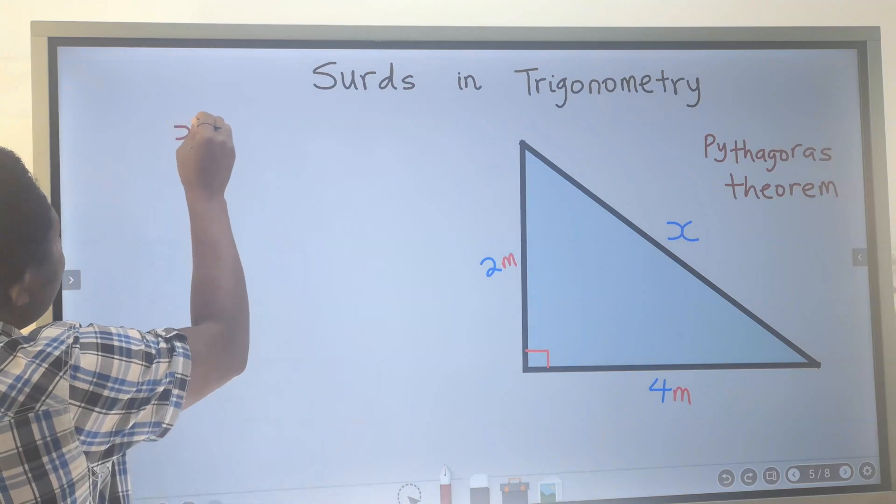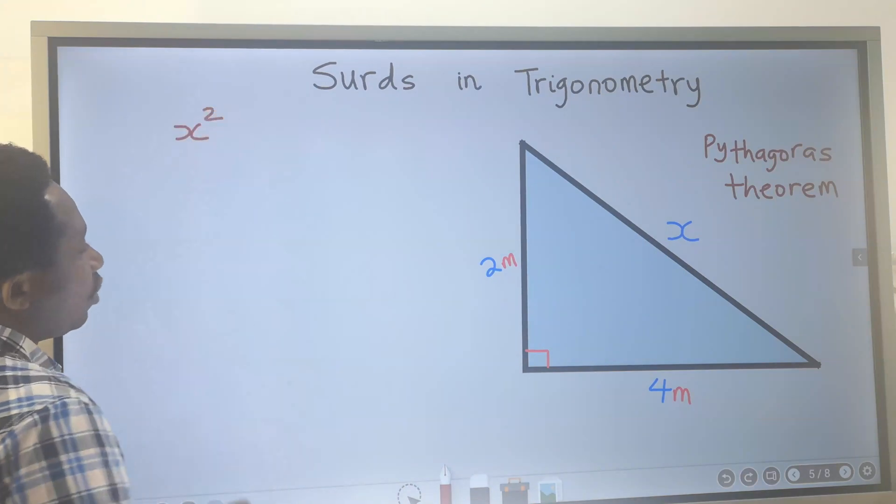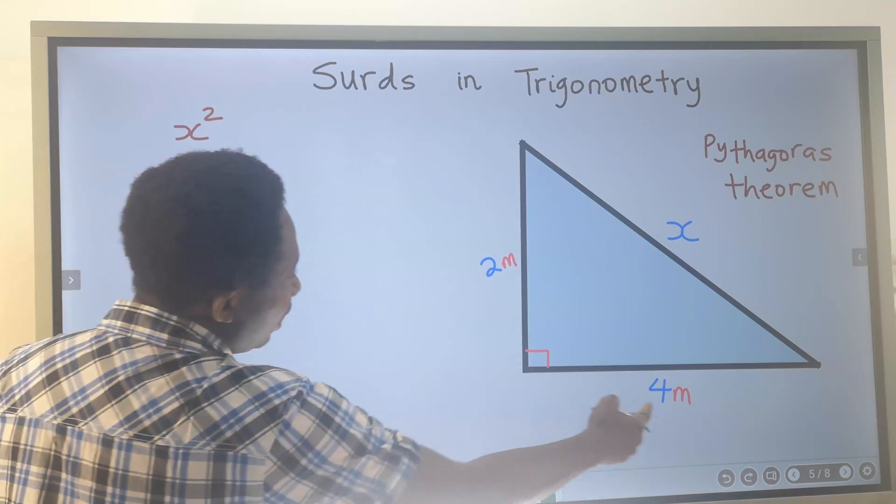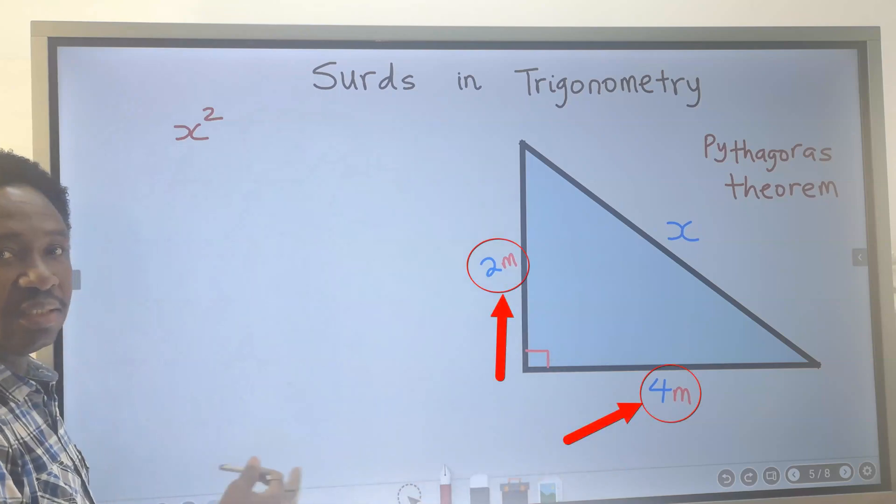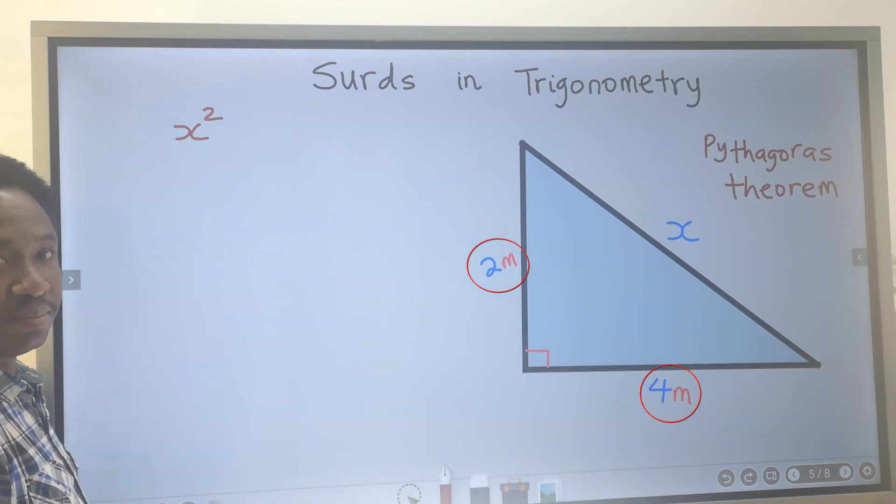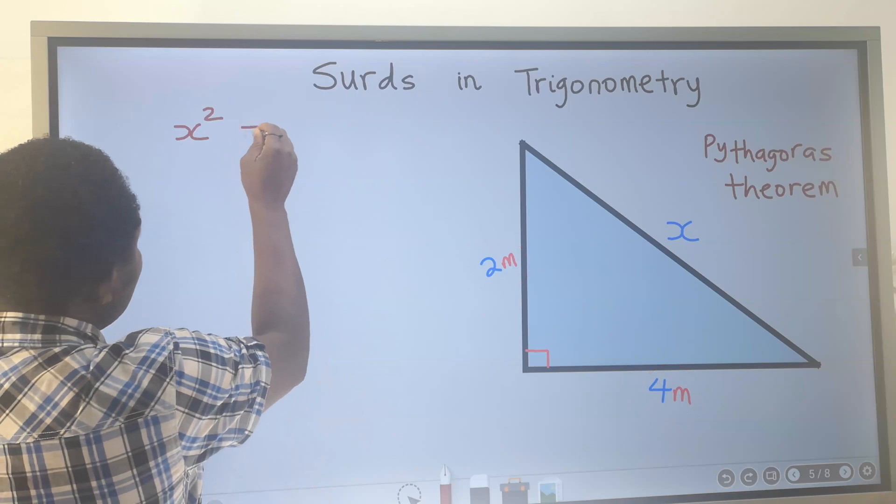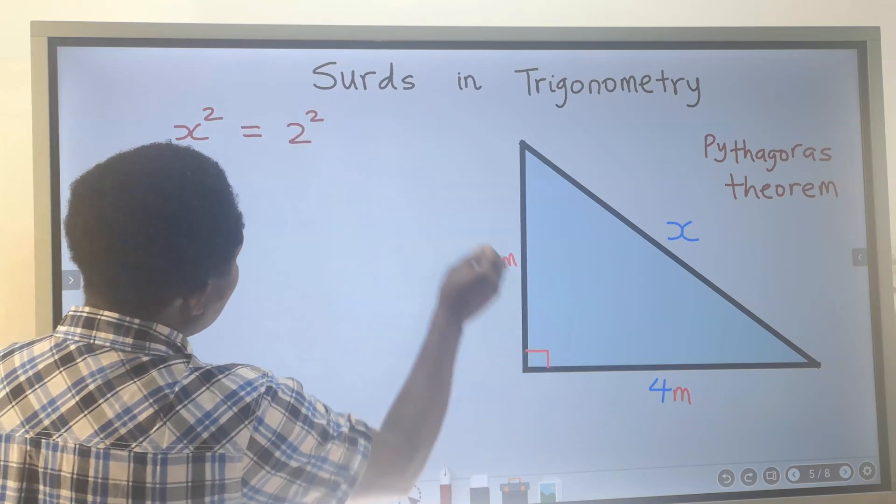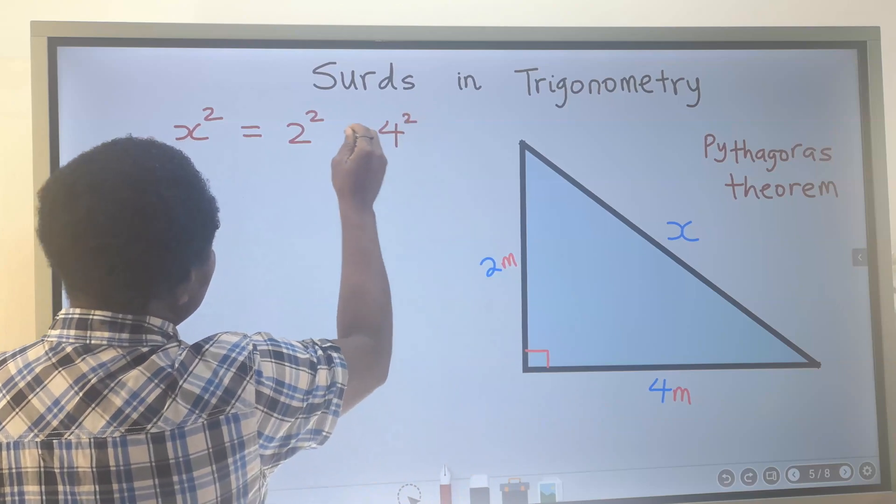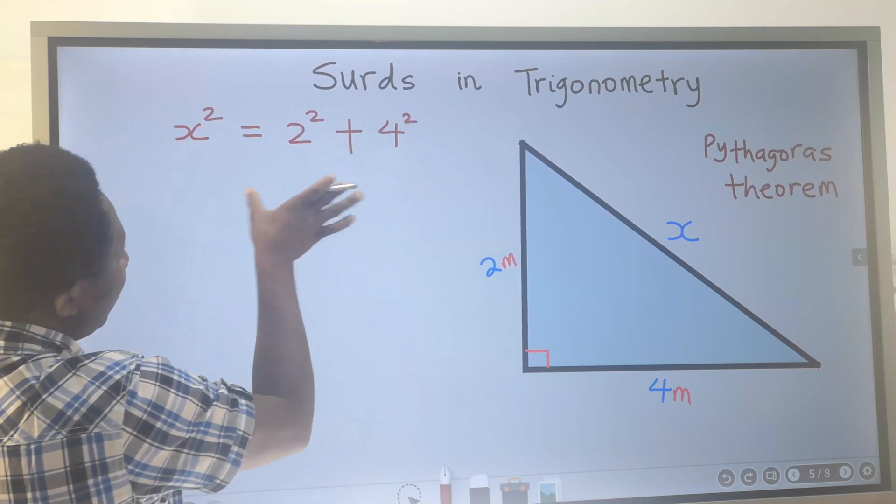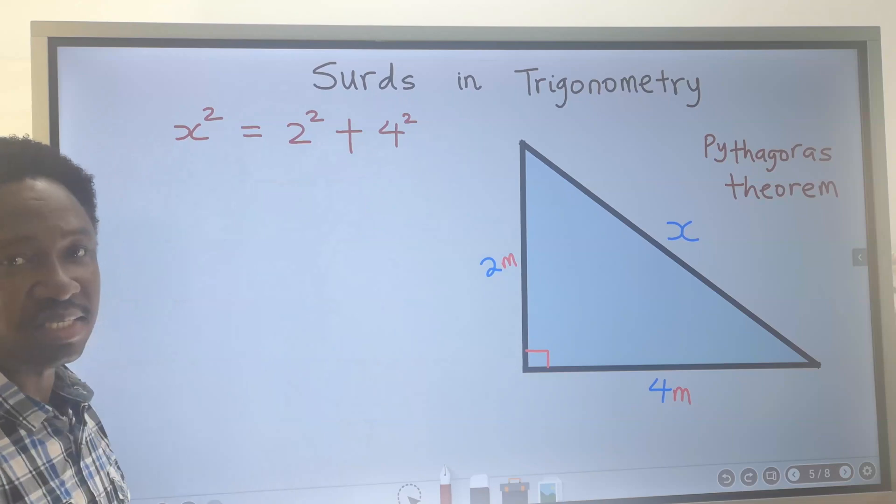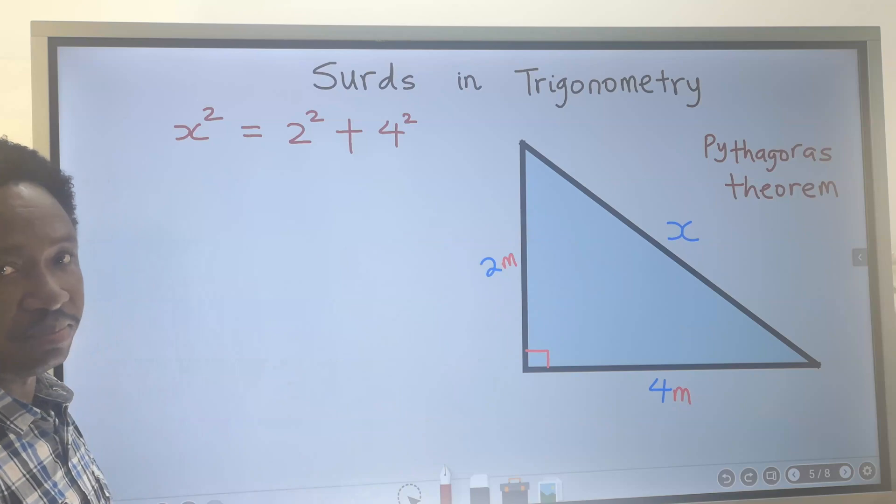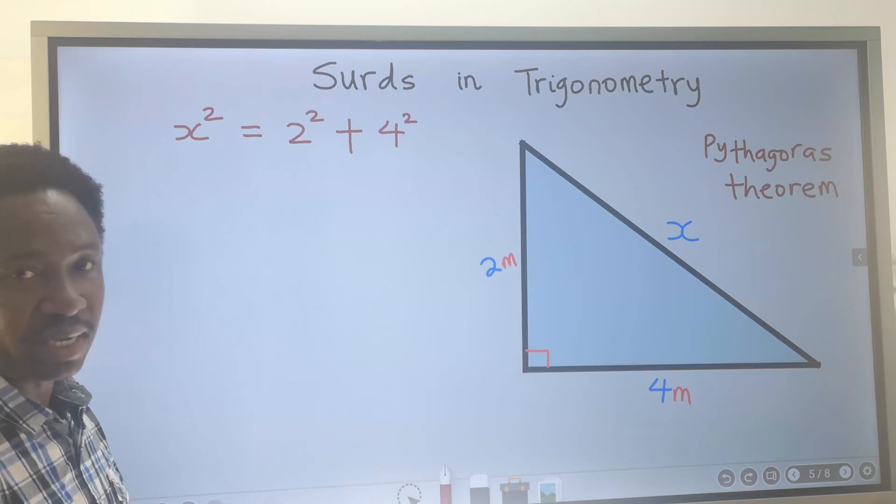Next, we are going to square the value of that longest side. Next, we are going to square both remaining sides and sum both of them. That is, here we are going to have 2 squared, and here we are going to have 4 squared. And we are going to add both remaining sides. We have applied Pythagoras theorem to enable us to find x.